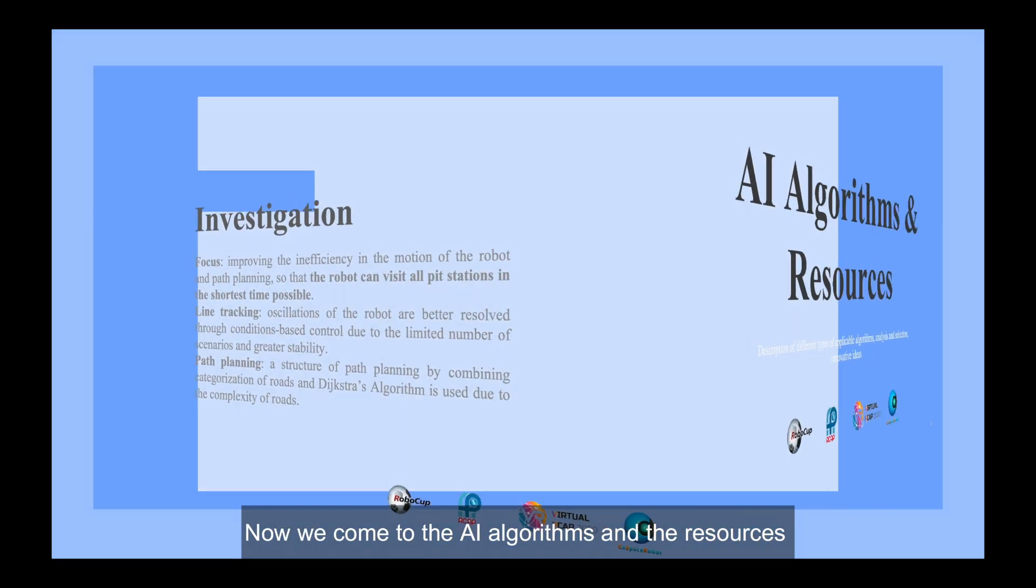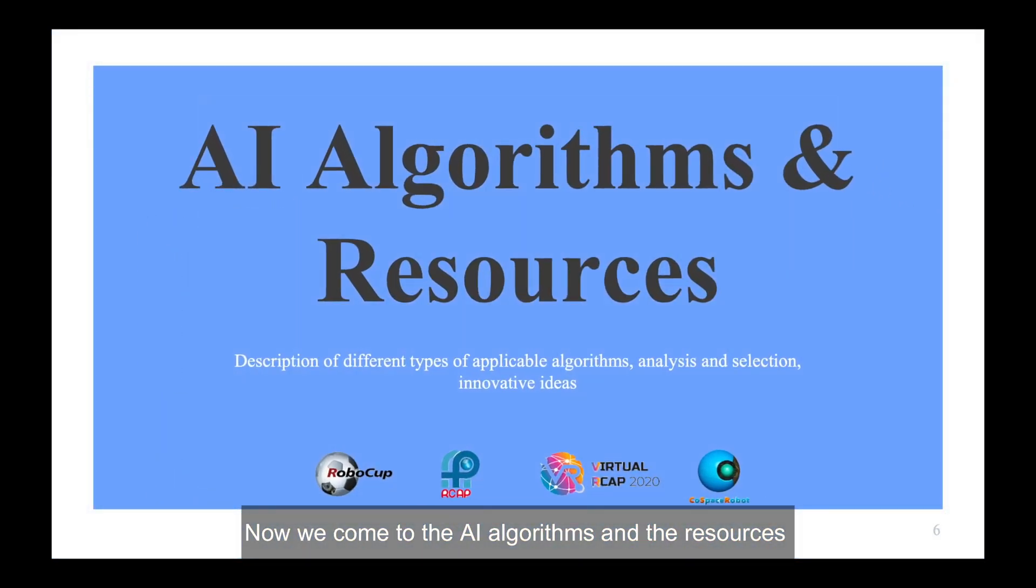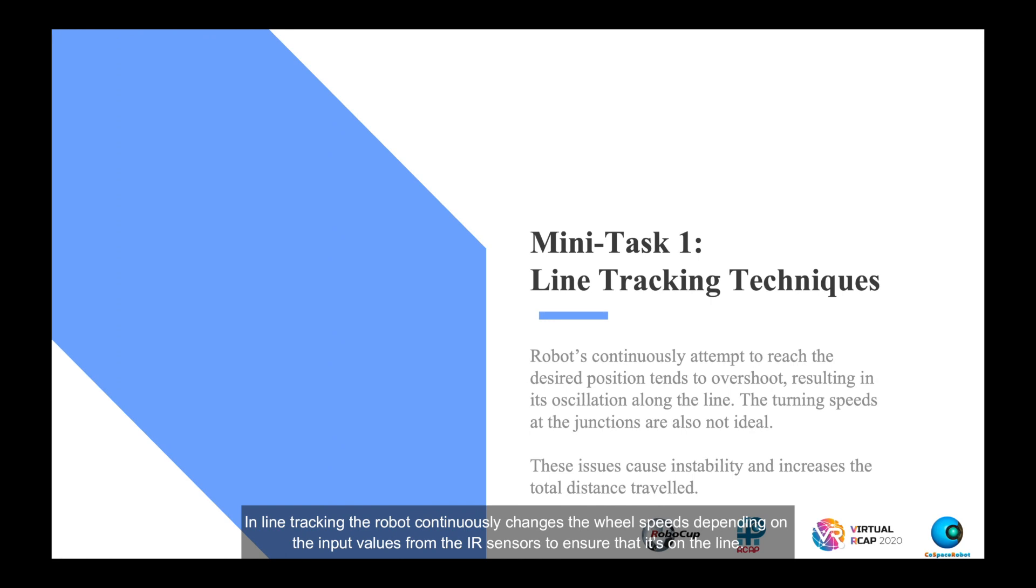Now we come to the AI algorithms and the resources. In line tracking, the robot continuously changes the wheel speeds depending on the input values from the IR sensors to ensure that it is on the line. However, each attempt to reach the desired position tends to overshoot, resulting in oscillation of the vehicle along the line that causes instability.